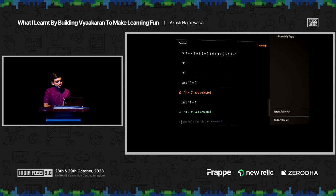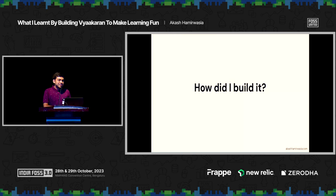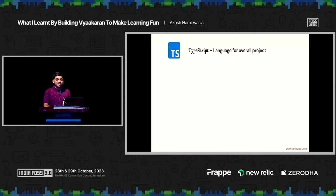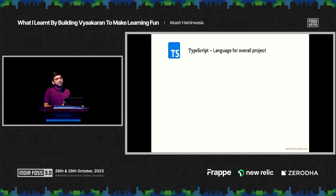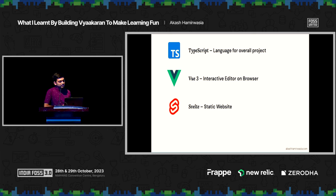Now let me share how I went about building it. The primary language I used was TypeScript. I'm a front-end developer, very comfortable with JavaScript and TypeScript, and my goal was to learn compiler design, not fiddle around with languages trying to optimize everything. The tool today might have bugs and might not be very performant, but I learned a lot, and it's helping a lot of students learn as well. The interactive editor is built with Vue 3, and the static website was built with Svelte — technologies I was just trying out since I primarily work with React. WinDCSS was the styling library I used for everything.